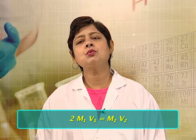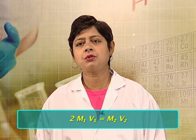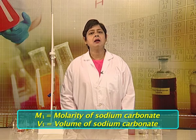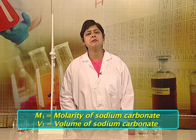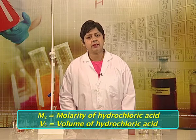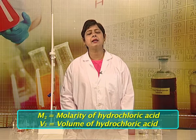For the titration between hydrochloric acid solution and sodium carbonate solution, the molarities and the volumes of acid and base are related as 2M₁V₁ = M₂V₂, where M₁ and V₁ respectively are the molarity and volume of sodium carbonate solution, and M₂ and V₂ respectively are the molarity and volume of hydrochloric acid solution.